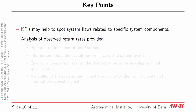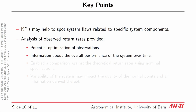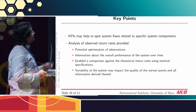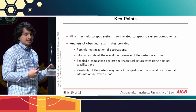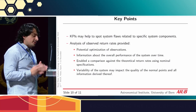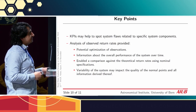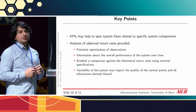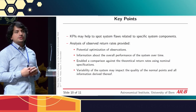The key points of this presentation are that KPIs may help to spot system flaws, and from our analysis we were able to find ways to optimize our observations. The information about the overall performance of the system over time enabled a comparison between the theoretical and observed ones, and the two were in good agreement. The variability of the system may impact the quality of the normal points due to spatial, target, and other dependencies — it would be worth investigating how much the impact is and whether it is worth taking into consideration.